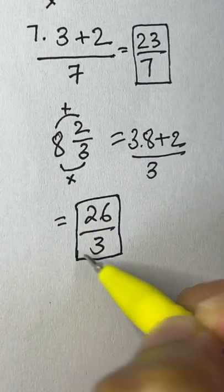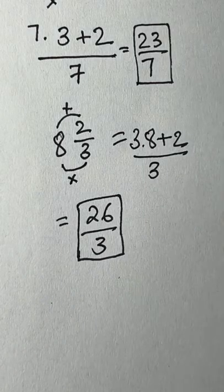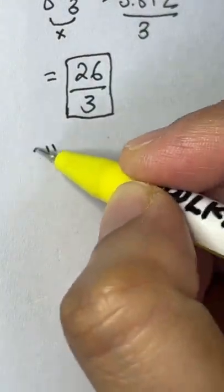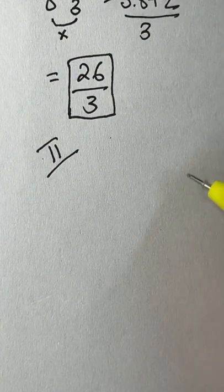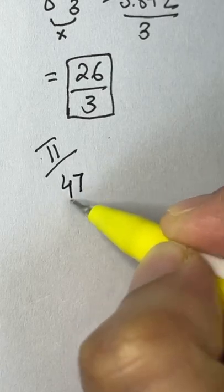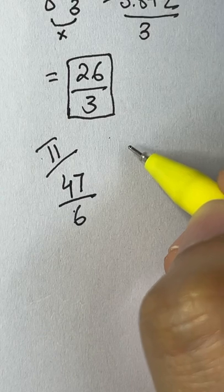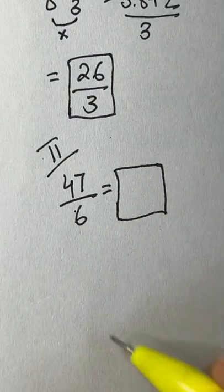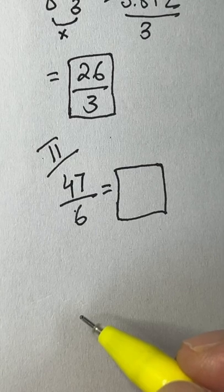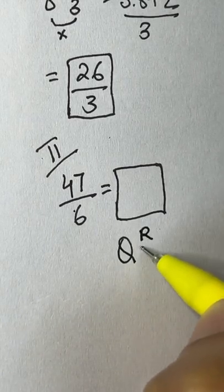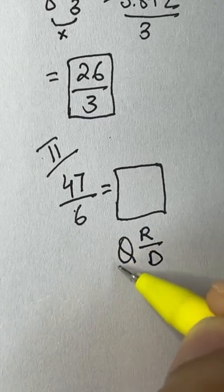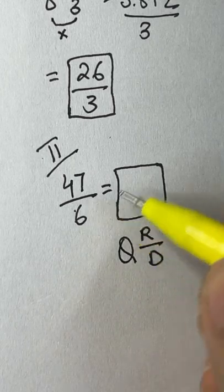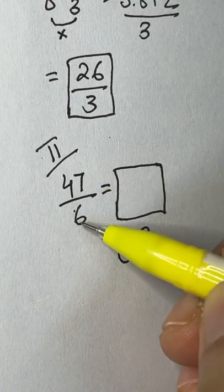The second short trick is to convert an improper fraction back to a mixed number. Suppose you have 47 over 6. We apply a QRD rule — quotient, remainder, and divisor. A mixed number looks like: quotient as the whole number part, and remainder over divisor as the fraction part. So we check how many times 6 goes into 47.